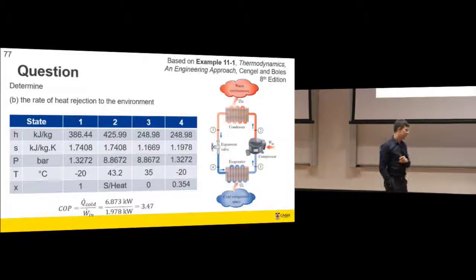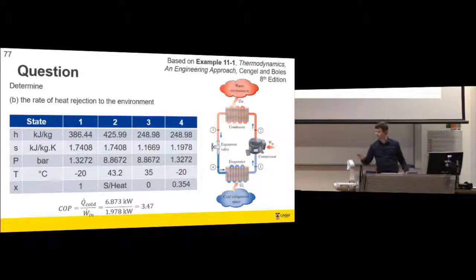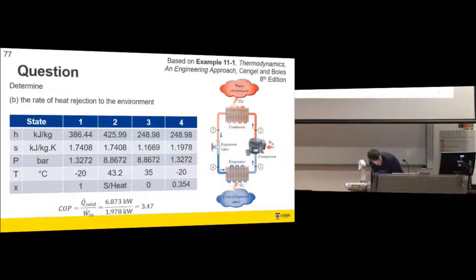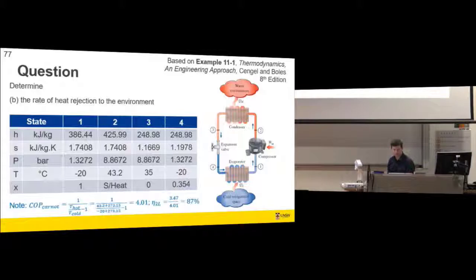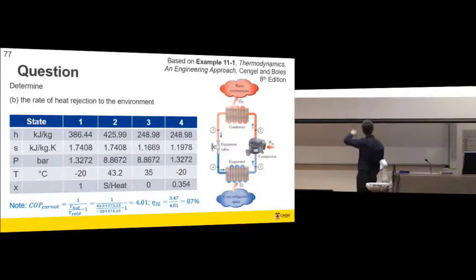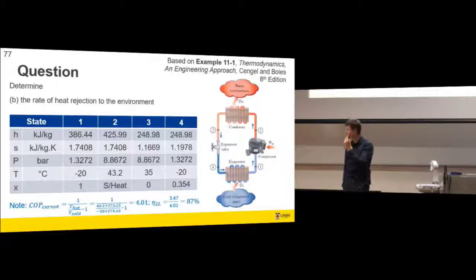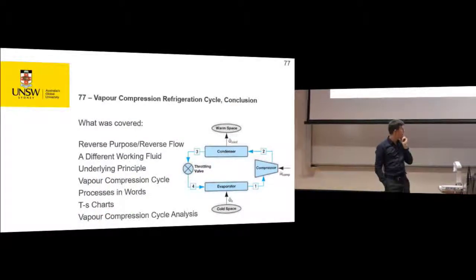The PowerPoint slides will be available - I'll upload them. I'll do some Rogers and Mayhew table work tomorrow. As a side note, the Carnot COP would be 4, so our second law efficiency is about 87%. That was the vapor compression refrigeration cycle.